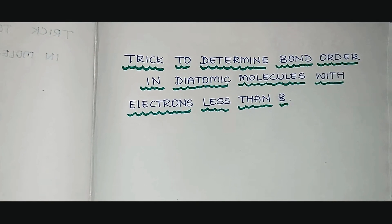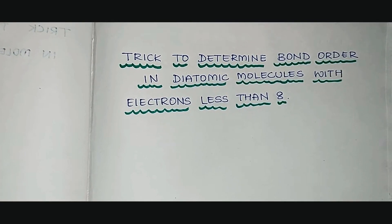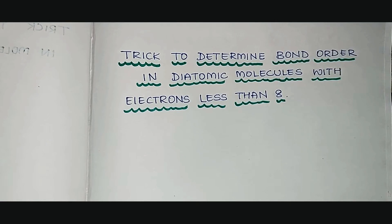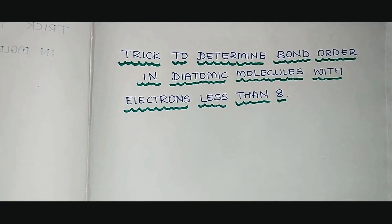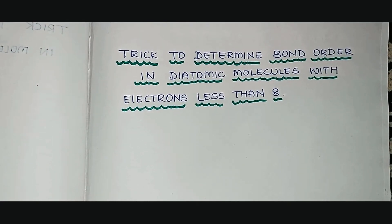Hello students. In today's video, we will be discussing the trick to determine bond order in diatomic molecules with electrons less than 8.